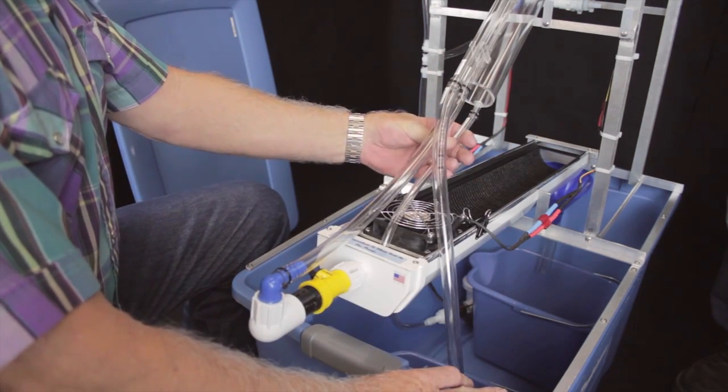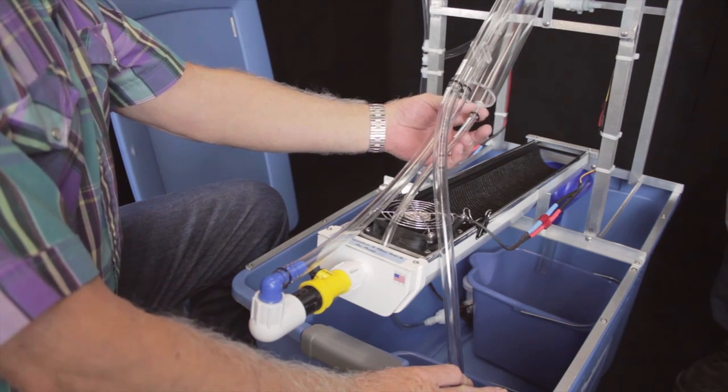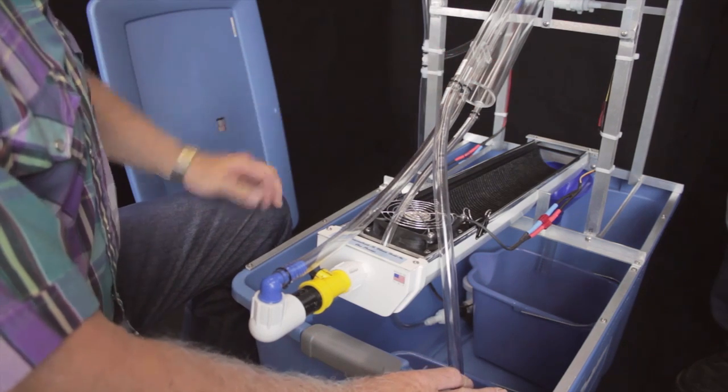I'd like to remind everybody that the smaller tube here that's marked concentrate also has a zip tie on it, but this remains permanently affixed to the collector separator and never has to be removed.